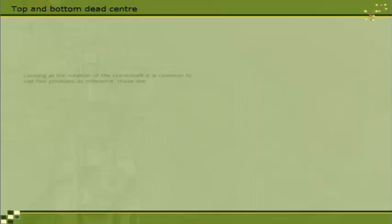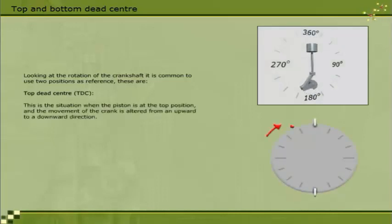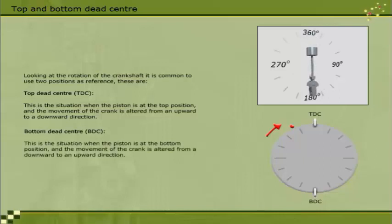Looking at the rotation of the crankshaft, it is common to use two positions as reference. These are Top Dead Centre, TDC, when the piston is at the top position and the movement of the crank is altered from an upward to a downward direction, and Bottom Dead Centre, BDC, when the piston is at the bottom position and the movement of the crank is altered from a downward to an upward direction.